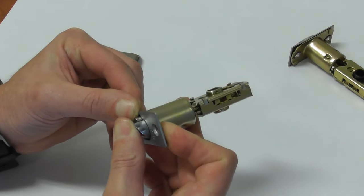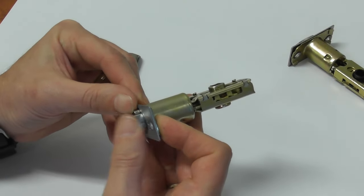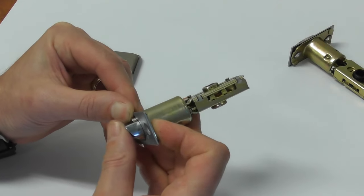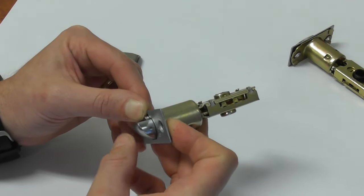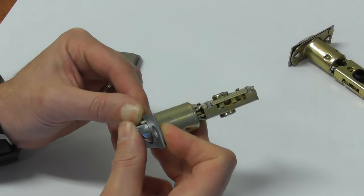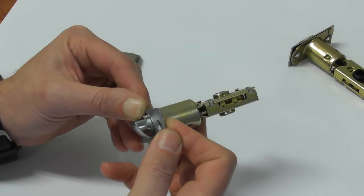Now, it doesn't matter how hard I push that. I cannot push that in. I can get a little bit of movement, but it will not push in. And therefore, if you stick a credit card or any other tool like that through the door, you can't compromise this lock.